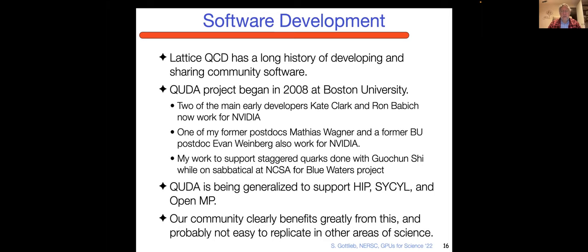I got this from GQuan2 this morning, who I think went straight from graduate school to Nvidia, but he also works mainly on the domain wall fermions, which have a fifth dimension. This is Mobius domain wall fermions, 64 cubed by 96 by 12. Blue is before the upgrade from Slingshot 10 to Slingshot 11 and red is after. He told me he was able to get a 64 GPU run done, which was 30% faster than what's shown here. But he couldn't get the other runs done, I think, or he just couldn't get to Perlmutter because it's in maintenance.